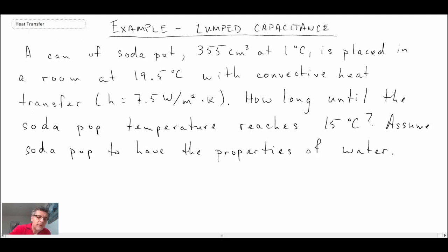Here's our problem statement. We have a can of soda pop sitting in the refrigerator, and we take it out and put it into a room with natural convection. The h value of 7.5 W/m²·K represents a low convective heat transfer environment.